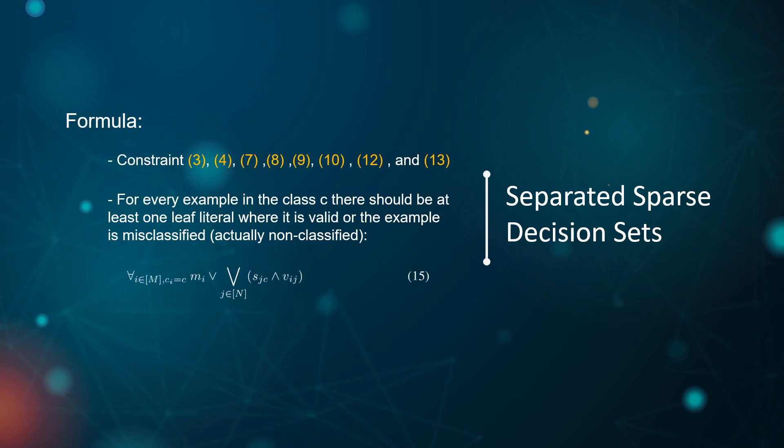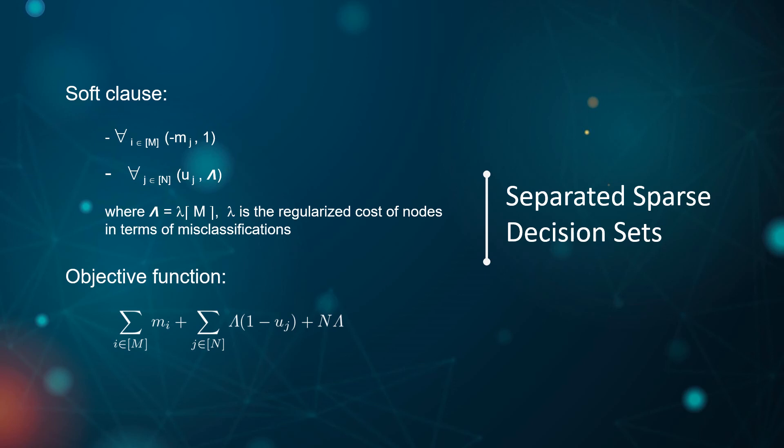The model for each class is identical to the previously introduced separated models with the following change: we include constraint 13 and modify constraint 14 so that for every example in the class, there should be at least one leaf literal where it is covered, or the example is misclassified. The objective function is the same as in the complete class model.